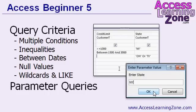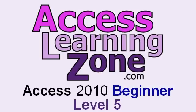We cover wildcard searches and the like keyword, then we cover parameter queries. A parameter query is great because instead of having multiple different queries in your database, you can just ask the user for the criteria when the query runs, which is much more powerful. So for more information on that, pick up my Access Beginner Level 5 class.